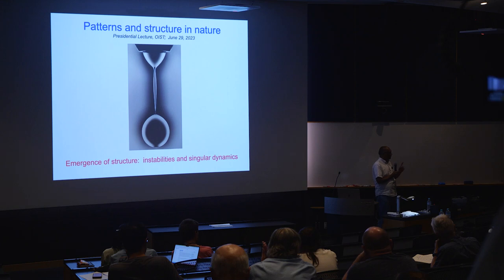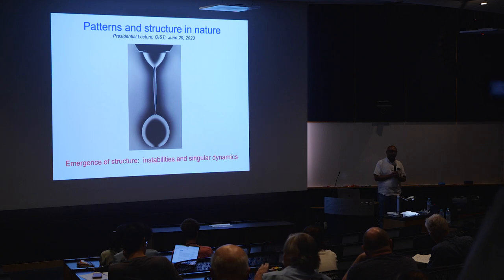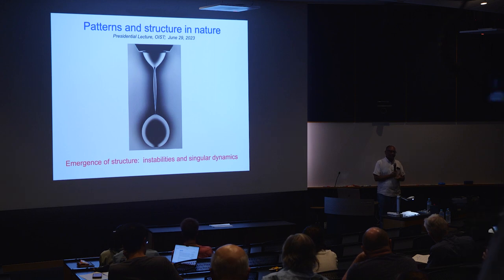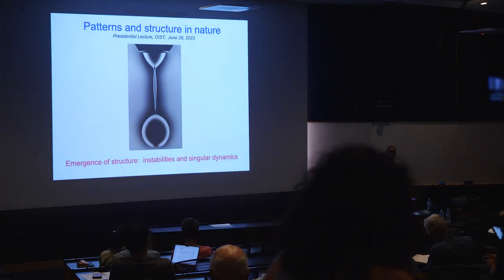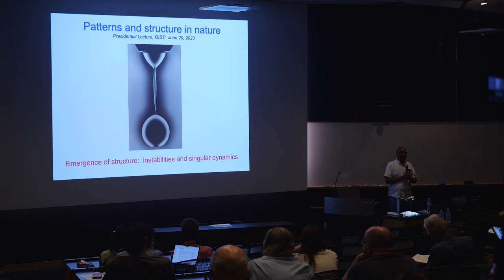By way of more formal introduction, Professor Nagel is the Stein-Freeler Distinguished Service Professor at the University of Chicago. He received his bachelor's from Columbia University. His PhD was from Princeton, and he was a postdoctoral fellow at Brown University, following which he moved to the University of Chicago, which has been his academic home ever since. His contributions to science have been recognized with several honors. He is a fellow of the American Physical Society and the American Association for the Advancement of Science, and an elected fellow of the National Academy of Sciences and the American Philosophical Society.